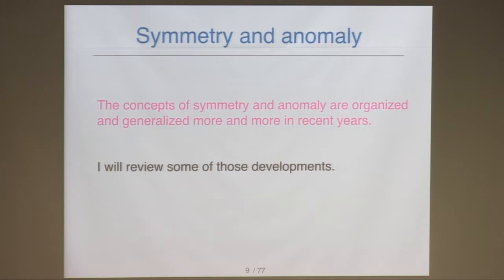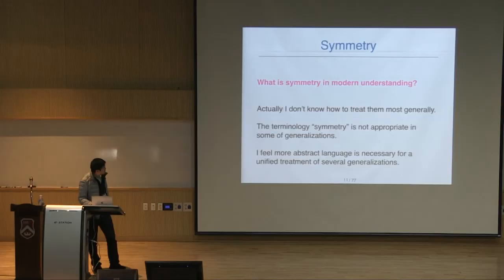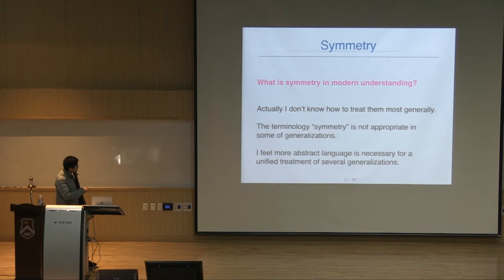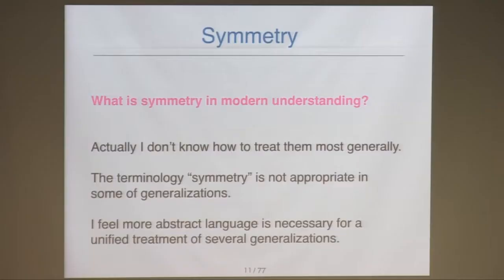So let me briefly give an overview of symmetry. What is symmetry in modern understanding? I don't know how to treat all generalizations in a most general unified way. I think the terminology 'symmetry' is not appropriate for some of the generalizations. The concept of symmetry is generalized in various directions, and I feel that a more abstract language is necessary for a unified treatment.